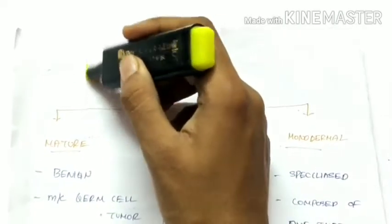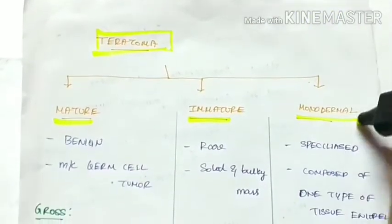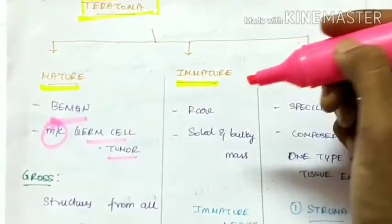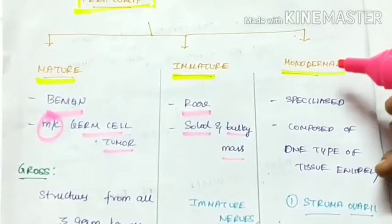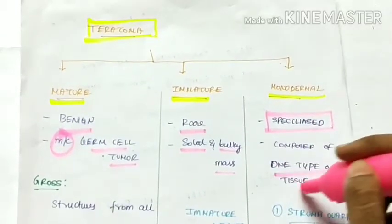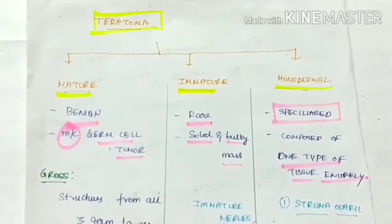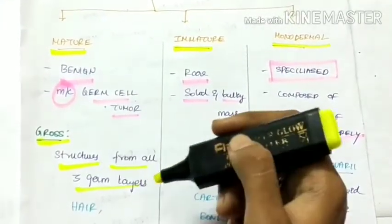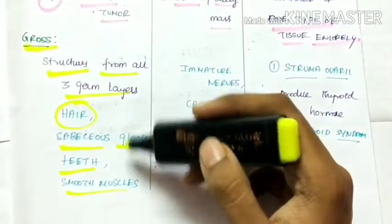The next type of germ cell tumor is Teratoma. A Teratoma is of three types: Mature Teratoma, Immature Teratoma, and Monodermal Teratoma. Mature Teratoma is benign and is the most common germ cell tumor, whereas the immature is rare and is made up of a solid and bulky mass. Monodermal Teratoma is a specialized type composed of only one type of tissue entirely. Grossly, the mature Teratoma shows structures from all three germ layers like hair, sebaceous glands, teeth, and smooth muscles.